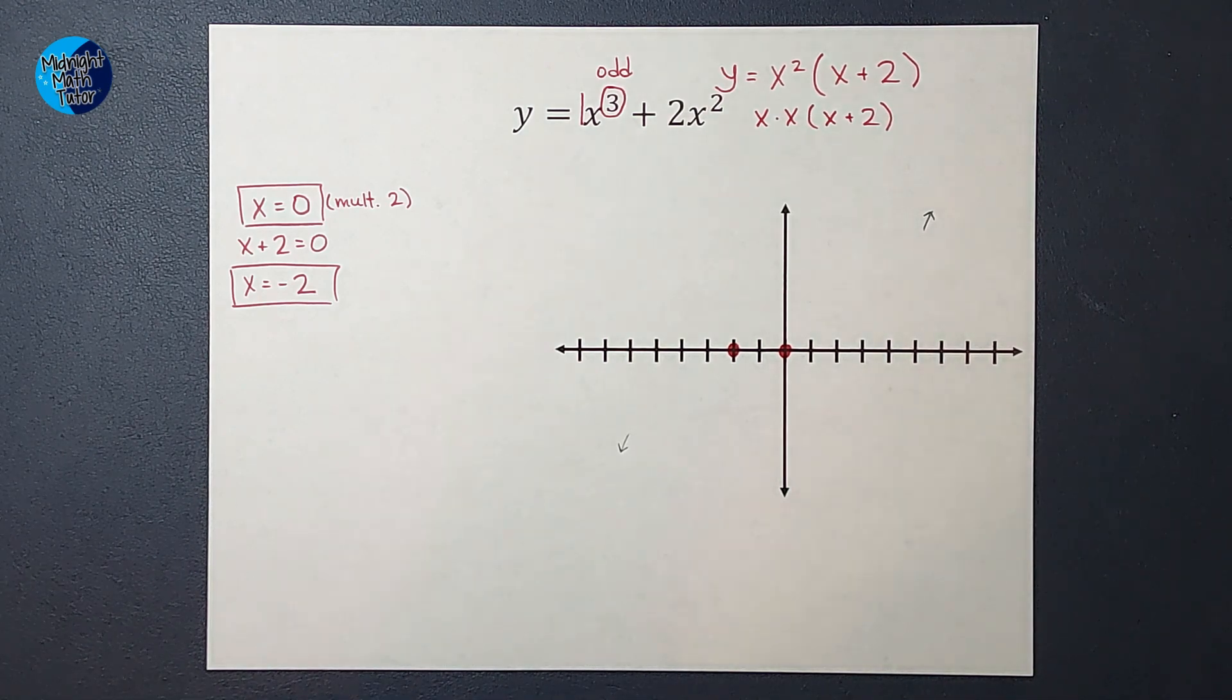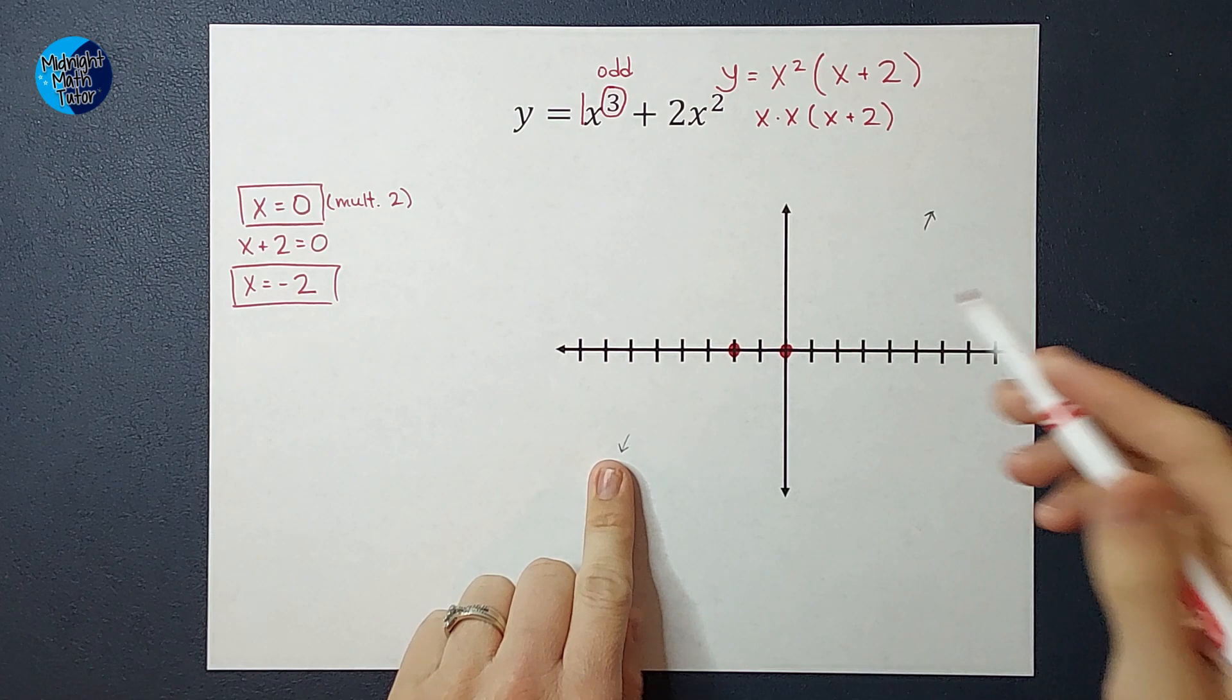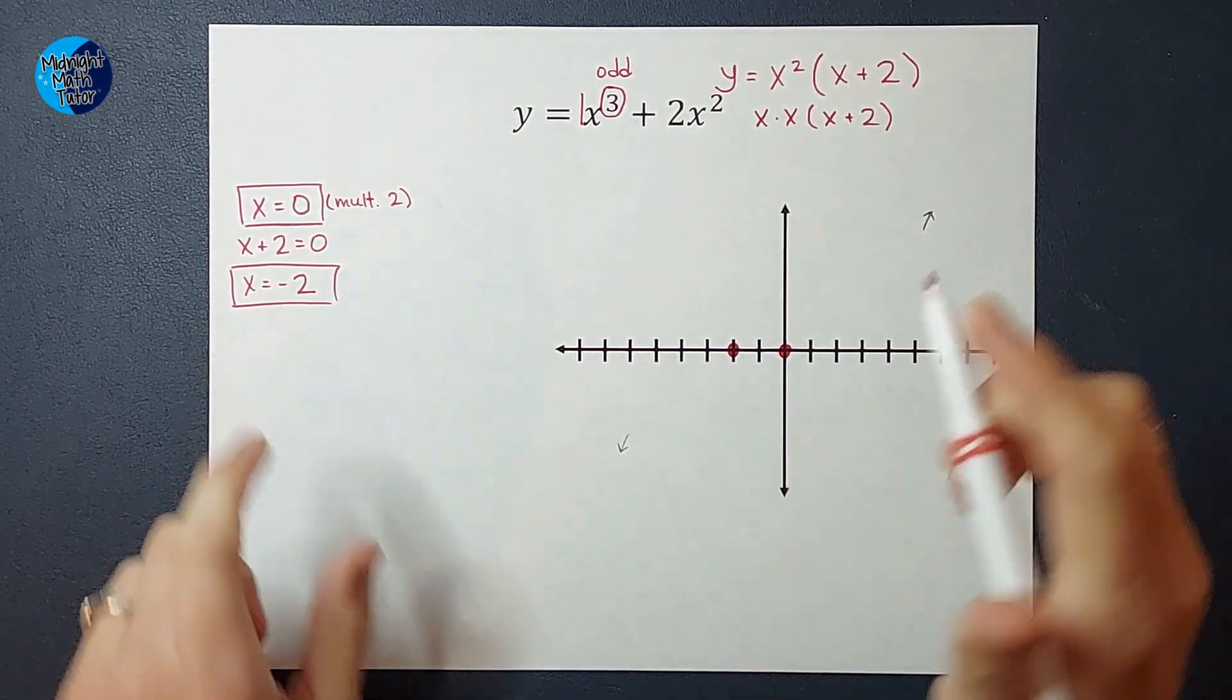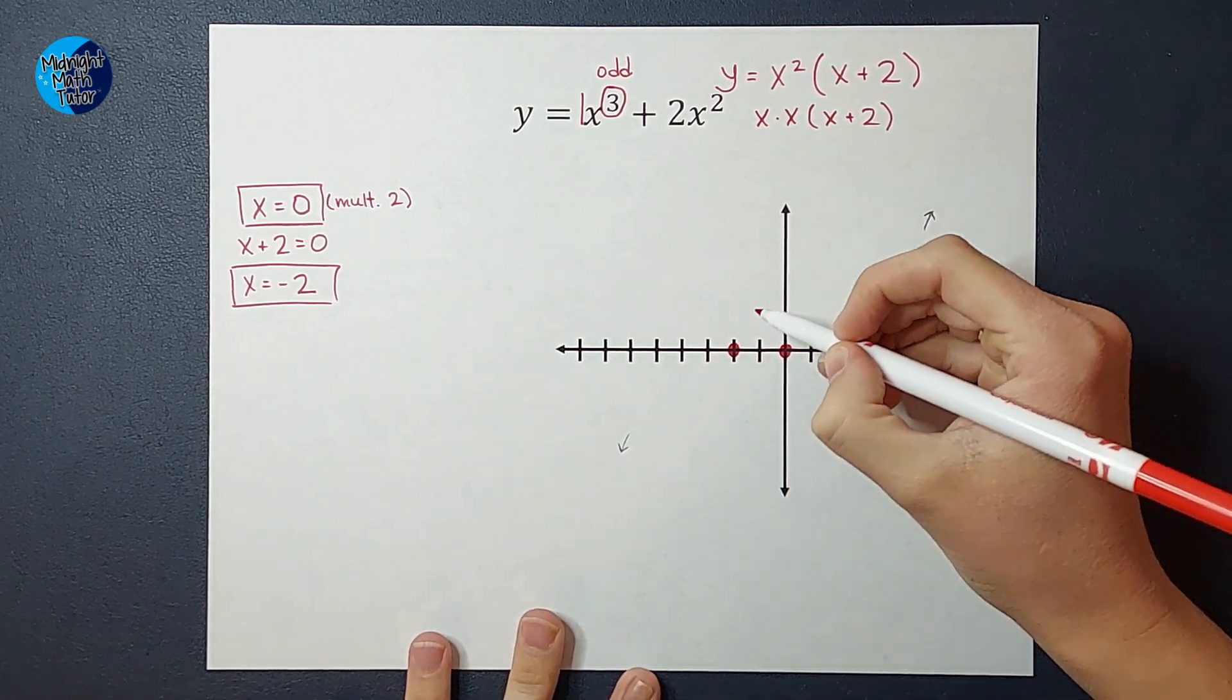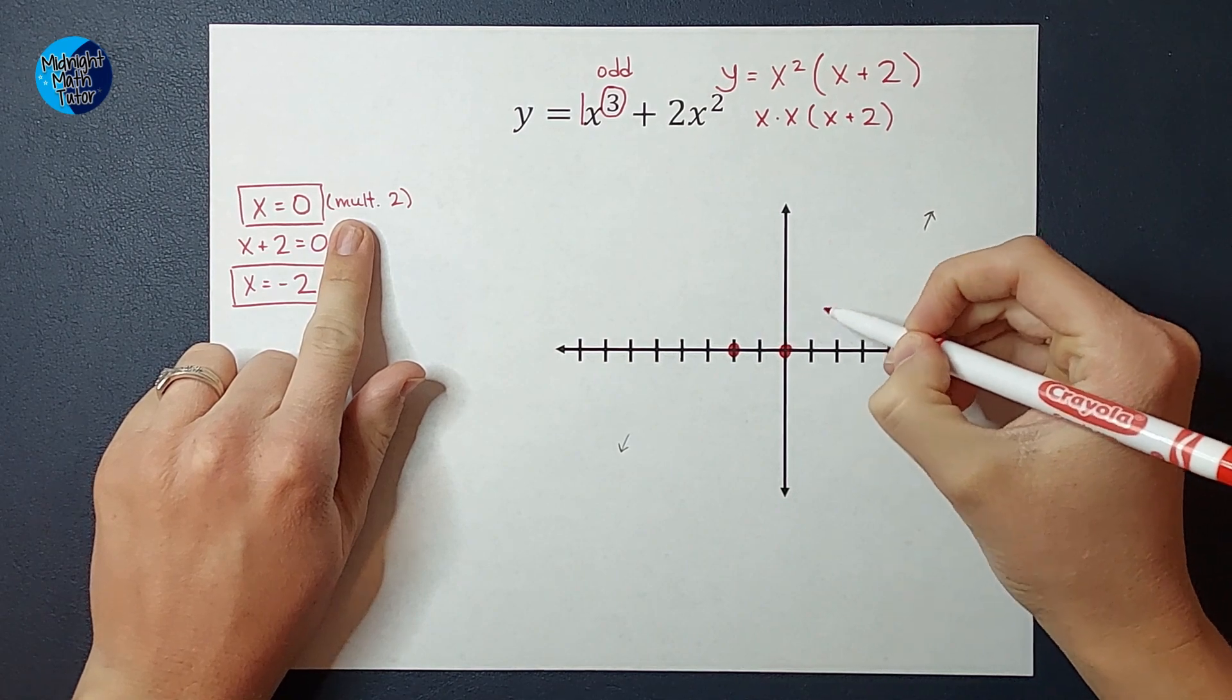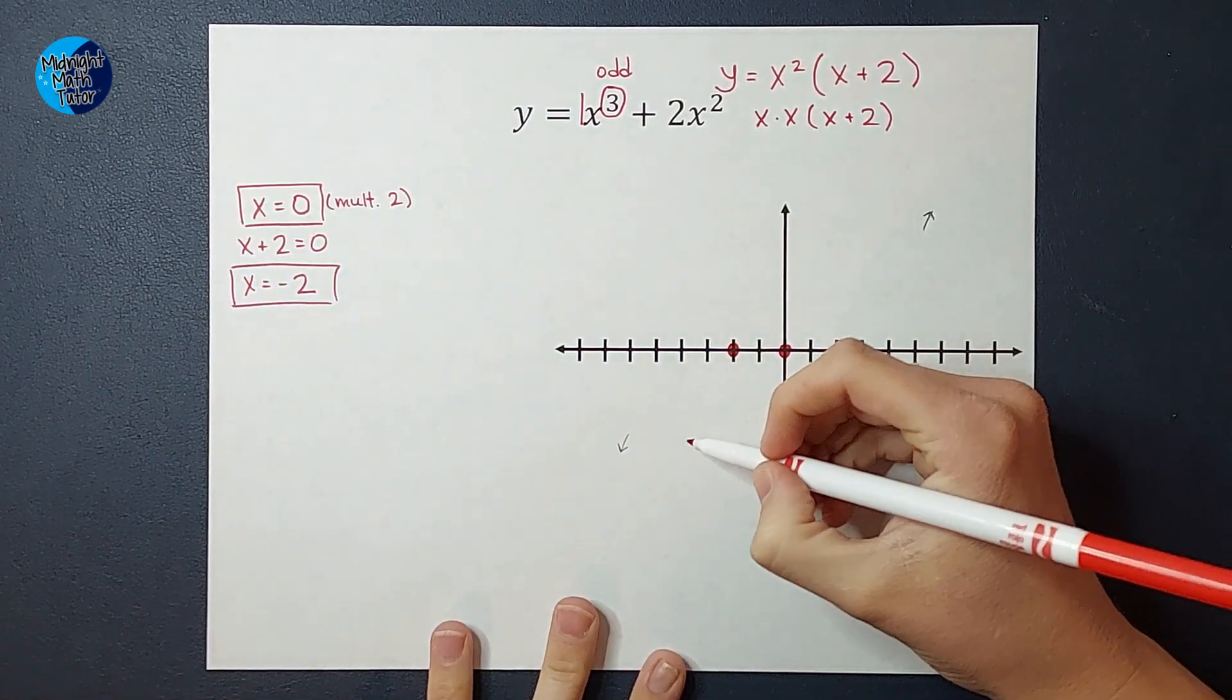And if you're like lady, what on earth are you talking about, let me just show you. So I know this side ends down. At negative two I had a multiplicity of one, so my graph is going to go through that. At zero I had a multiplicity of two, so it's going to bounce and end up.